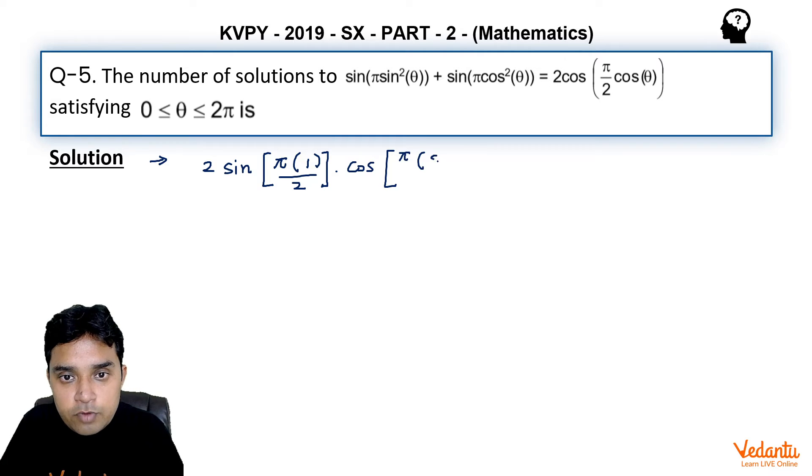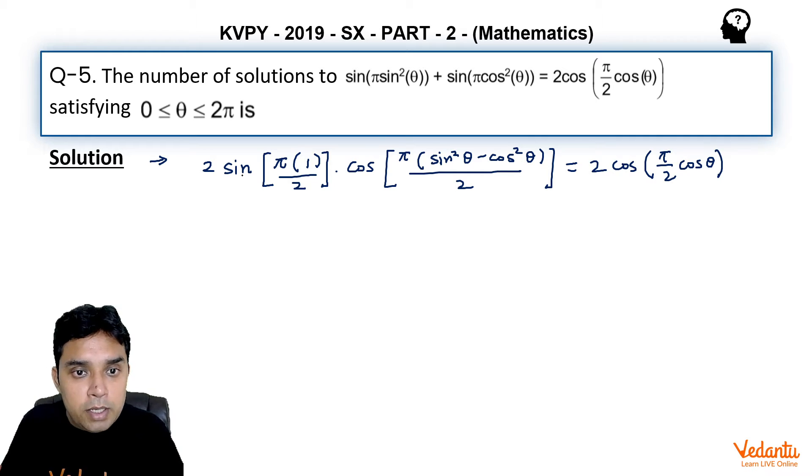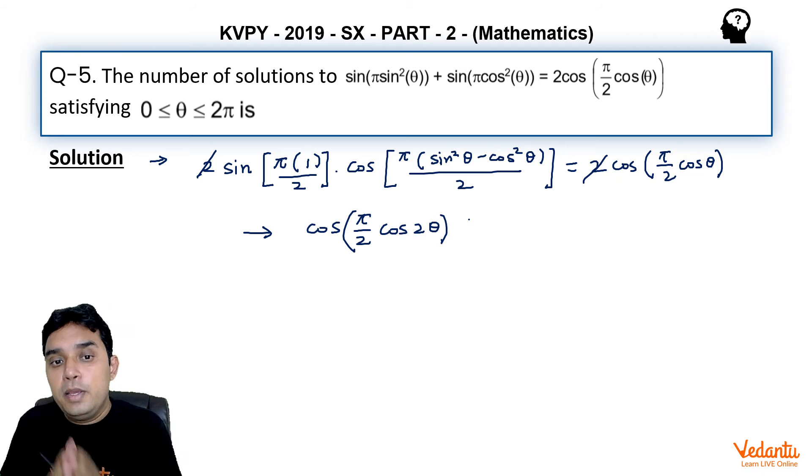If I take π common, this will be (sin²θ - cos²θ)/2, and this is equal to 2cos(π/2 cosθ). Now sin(π/2) is 1, and this 2 can be cancelled here. Sin²θ - cos²θ is minus cos 2θ, but as cos(-θ) is cosθ, I can write this as cos(π/2) into cos(2θ). That minus sign has been absorbed by that property of cos(-x) equals cos x, and this is equal to cos(π/2 cosθ).